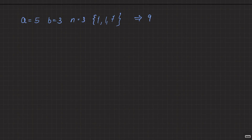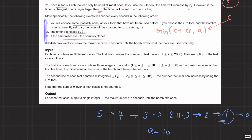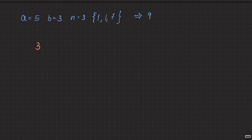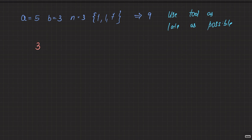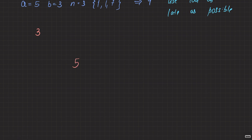What you want to do is maximize the time until the bomb explodes. Taking the example from Codeforces: starting timer is three, tools are [1, 1, 7]. The key insight is: use the tool as late as possible. For example, if the timer starts at five and a is five, and you use a tool with value four immediately — five plus four is nine, but bounded to five — you still only get five seconds.